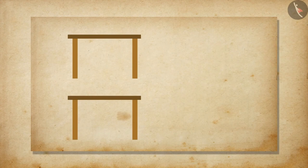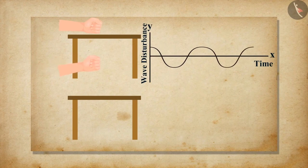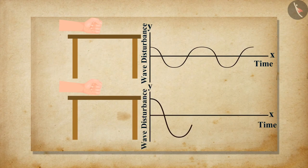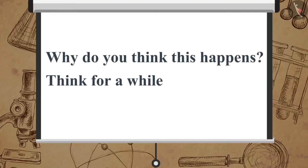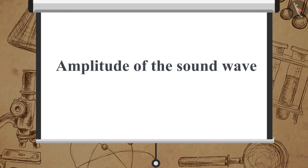Now, when we tap a table lightly, we hear a soft sound. While when we hit a table hard, we hear a loud sound. Why do you think this happens? Think for a while. It happens due to the amplitude of the sound wave.